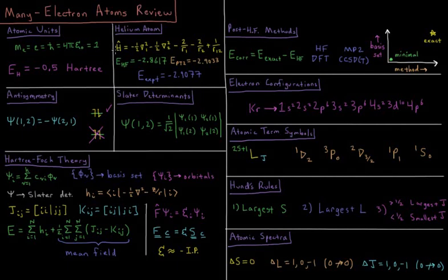For the helium atom, our Hamiltonian is going to be the kinetic energy of each electron in atomic units, minus 1 half del 1 squared, minus 1 half del 2 squared, plus their attraction to the nucleus, minus 2 over r1, minus 2 over r2, plus their repulsion from one another, 1 over r12.